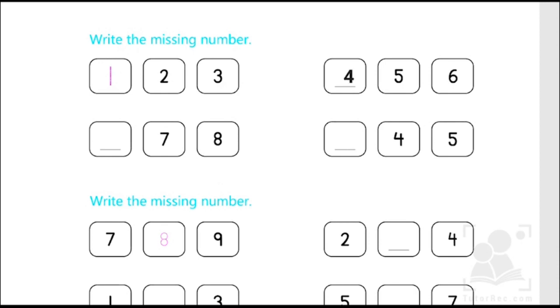So kids, similarly you have to find out what comes before 7 and 8, and you have to put it over here. In the next one you have to find out what comes before 4 and 5, and you have to write it in this box.